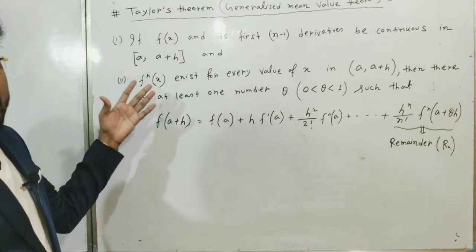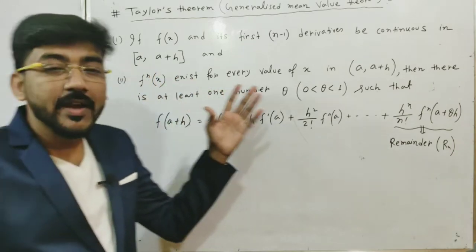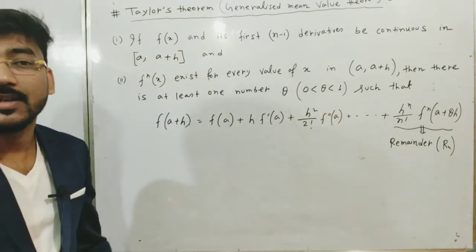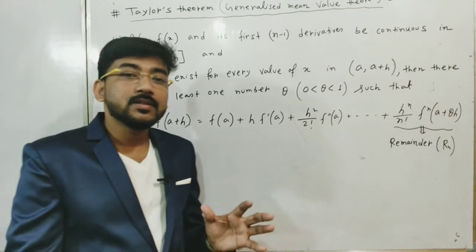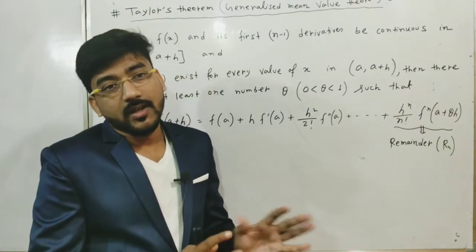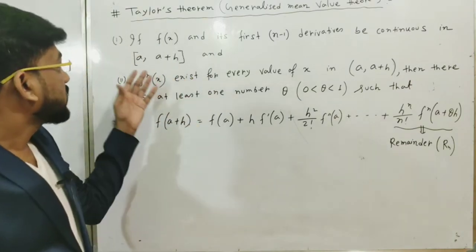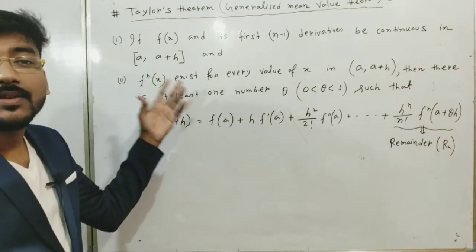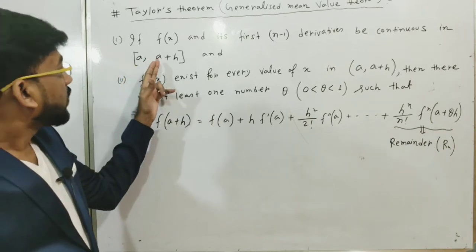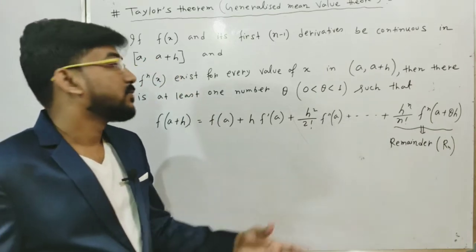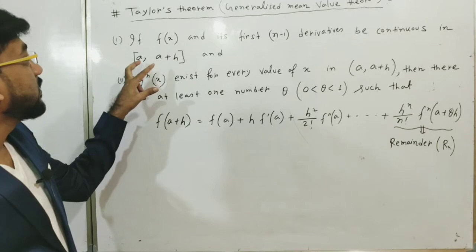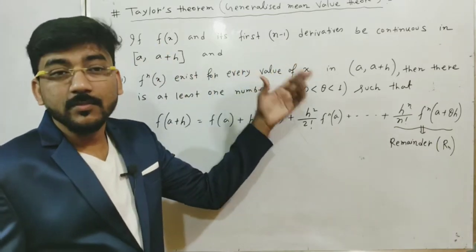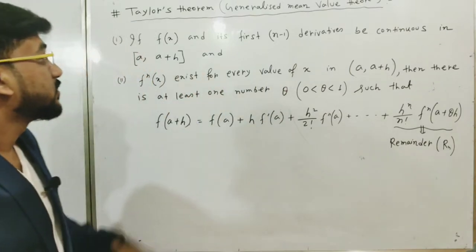The statement is: if there is a function f(x) and its first n minus 1 derivatives are continuous in the closed interval [a, a+h] — note that in Lagrange's mean value theorem I used the interval [a, b], and here instead of b I have used a+h, where h is very small. This is the first criteria.